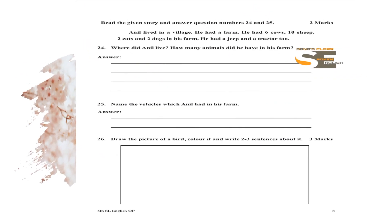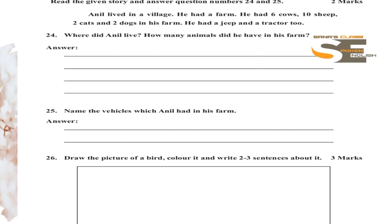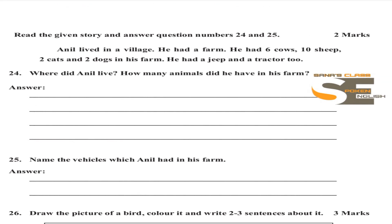For questions 24 and 25, read the given story and answer. Here is the story: Anil lived in a village. He had a farm. He had six cows, ten sheep, two cats and two dogs in his farm. He had a jeep and a tractor too.